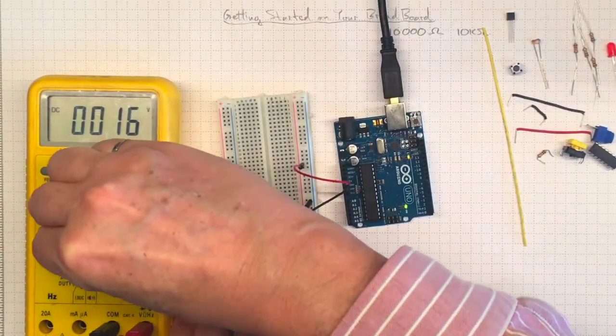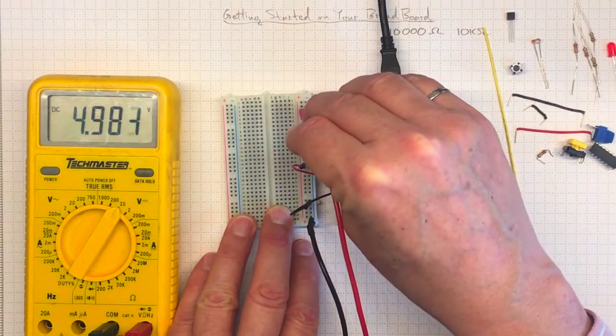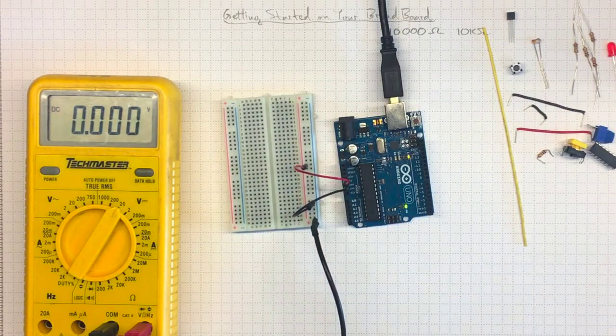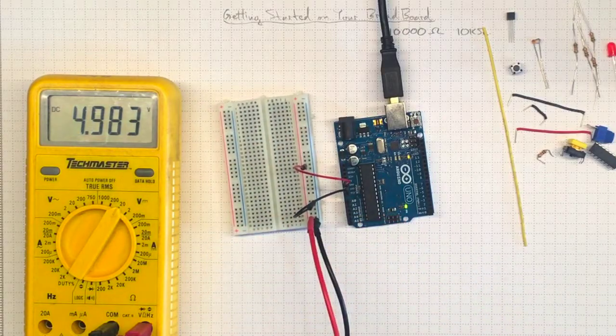Setting it to the 20 volt DC range, it's a little tricky with the breadboard squirming around. We got 5 volts so that's good. I'm going to keep checking voltages every time I make some change on the breadboard just to make sure I'm getting the hardware right.